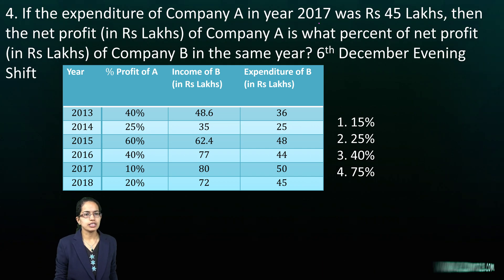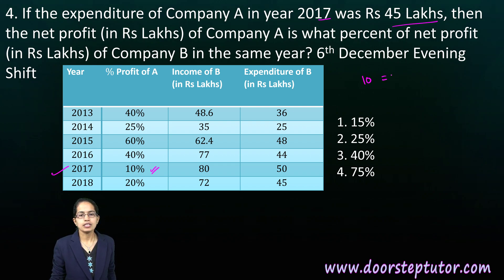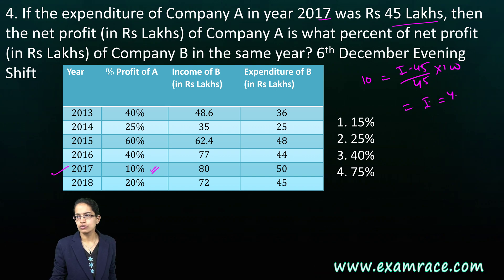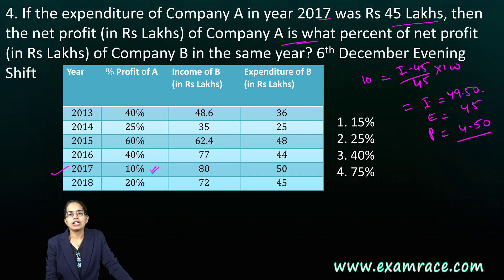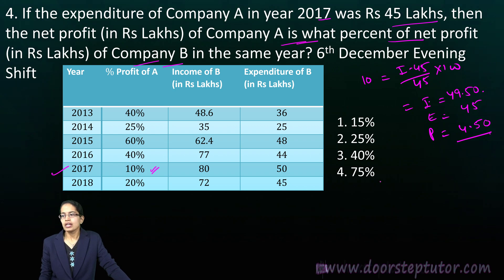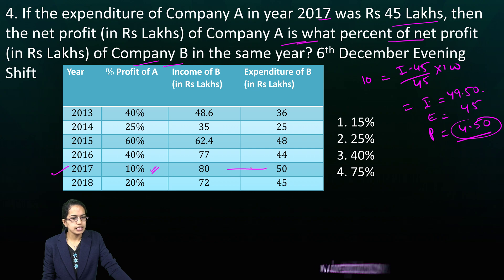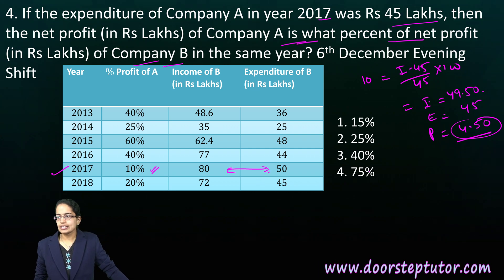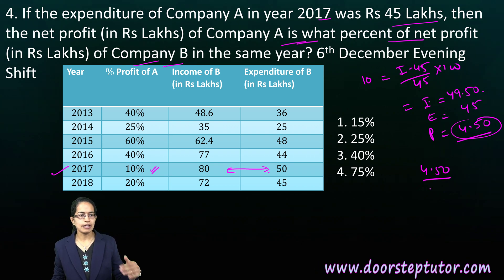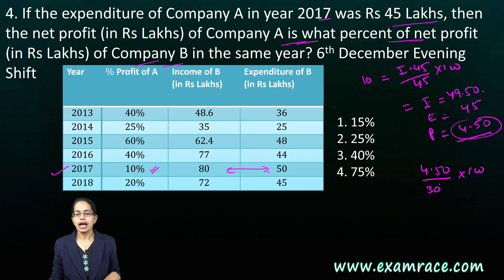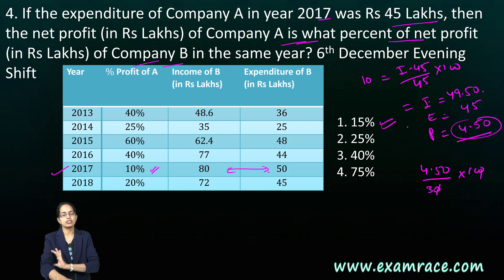The next question: the expenditure of company A in 2017 was given as 45 lakhs, with a profit percentage of 10%. So 10 = (income minus 45) divided by 45 into 100. Solving, income comes out to 49.50 lakhs, giving a profit of 4.5 lakhs. What is asked is: the net profit of company A is what percent of the net profit of company B? Net profit of B is 30 lakhs. So it is (4.5 divided by 30) into 100, which comes to around 15% — a very direct question.